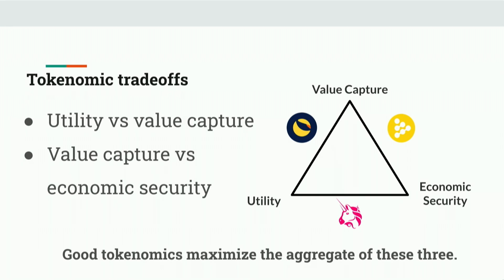There is a trade-off between utility and value capture, just like there's a trade-off between the value to consumers of a product or service and the profit of a business — you have to balance these two things. Value capture also has a trade-off with economic security. If you capture too much value by making your asset the base collateral token for another token in your protocol that has a lot of demand — like Terra did — then you risk collapse through an economic security vulnerability.